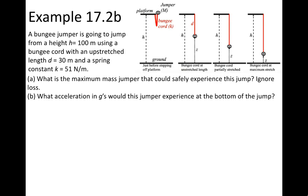And for our last example, we have a bungee jumper that's going to jump from a height of 100 meters using a bungee cord with an unstretched length of 30 meters and a spring constant k of 51 newtons per meter. Part A wants us to find the maximum mass that a jumper could safely experience the jump, ignoring any loss of energy. So if we're ignoring any losses of energy and there's no non-conservative forces to do any work on our system, then energy is going to be conserved. The type of energy that the system starts with is gravitational potential energy, and that gets converted into elastic potential energy as the bungee cord stretches.